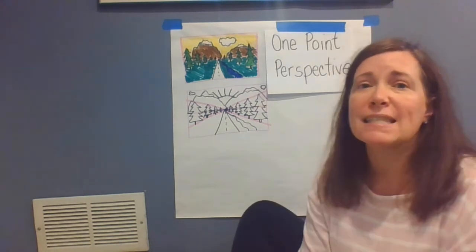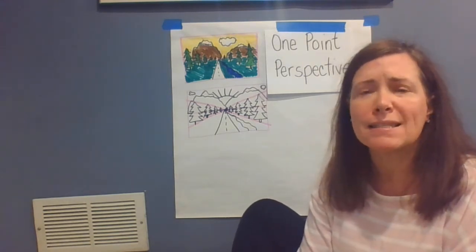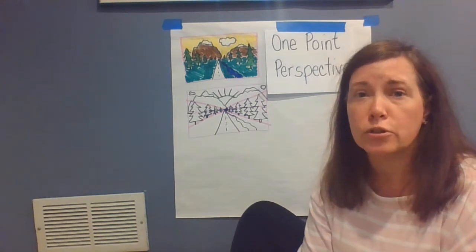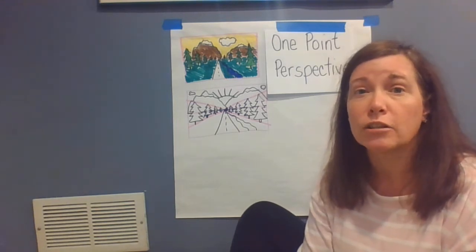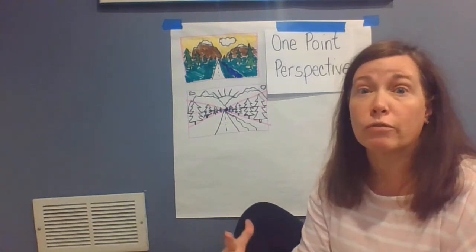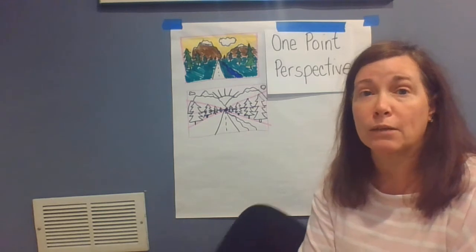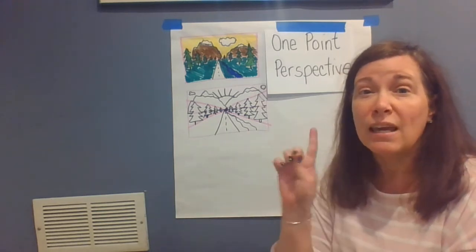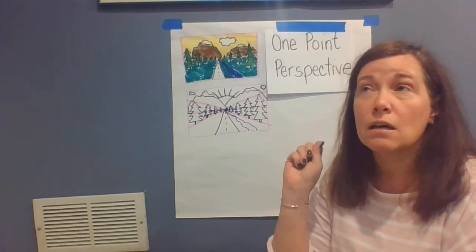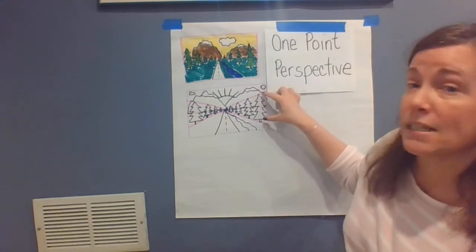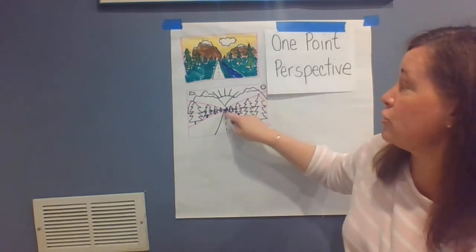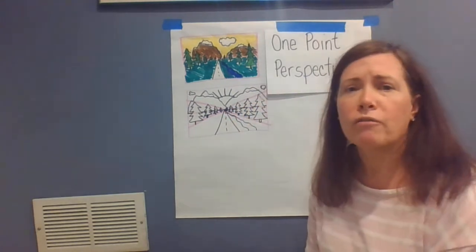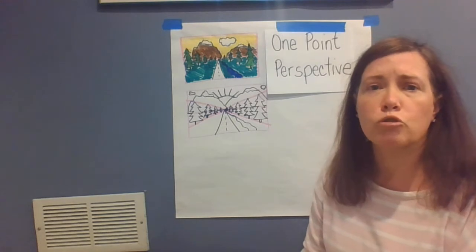One-point perspective is a system, a tool that artists use to draw something that looks like it is three-dimensional or in perspective. It's a system where things look like they are disappearing into one point.